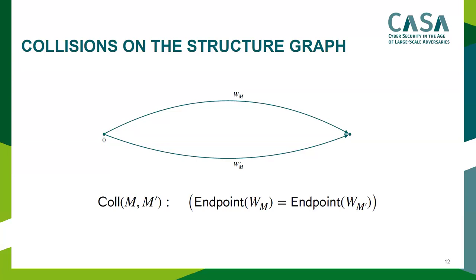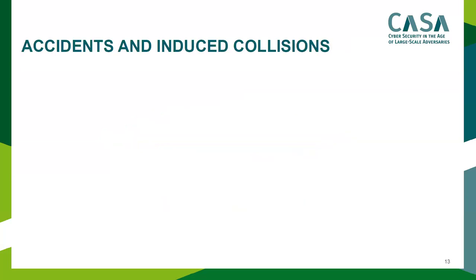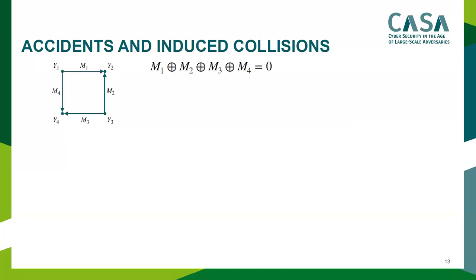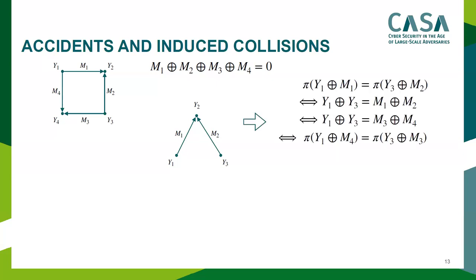For collision, the embedding is simple: we just want the endpoints of any two walks to collide. The probability of collision is bounded by the probability of realizing a random structure graph where two walk endpoints collide. To compute this probability we must characterize these structure graphs, and the most important parameter for that characterization is what Bellare et al. called accidents and induced collisions.